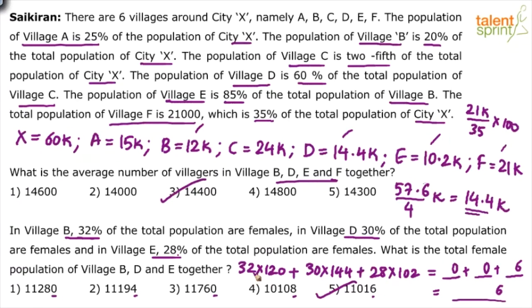So answers are option 3 and option 5. Now there's a query: why should X be 60k if it's not mentioned that all six village populations add up to X? But that point is wrong — the first line itself says population of F is 21,000 which is 35 percent of X. And just checking: 15 plus 12 is 27, plus 24 is 51 — it's already crossed 60k, so X is independently derived.